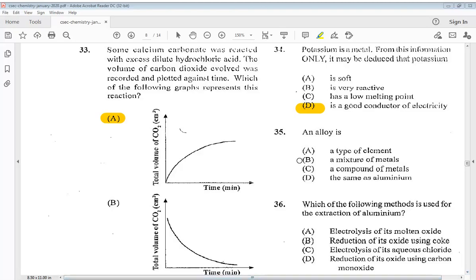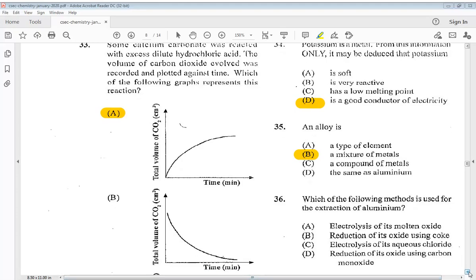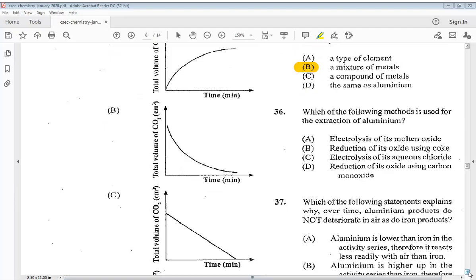Question 36. Which of the following methods is used for the extraction of aluminum? A electrolysis of its molten oxide, B reduction of its oxide using coke, C electrolysis of its aqueous chloride, or D reduction of its oxide using carbon monoxide. So the answer would be A, electrolysis of its molten oxide.